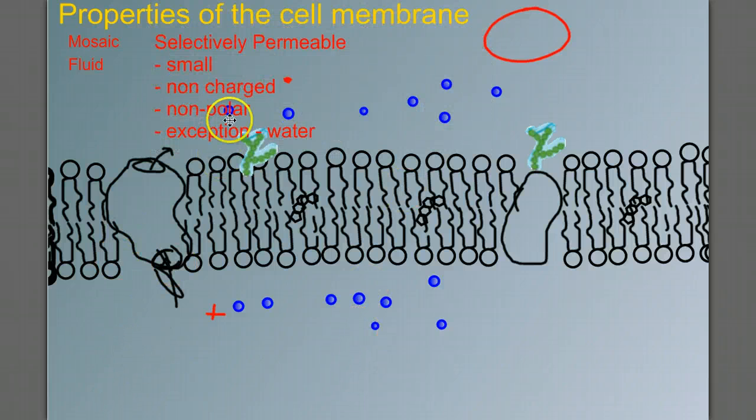Now that doesn't mean that things that are larger or charged or polar can't get through. They just have a hard time getting through this part, through this cell bilipid layer. And that brings us to transports.